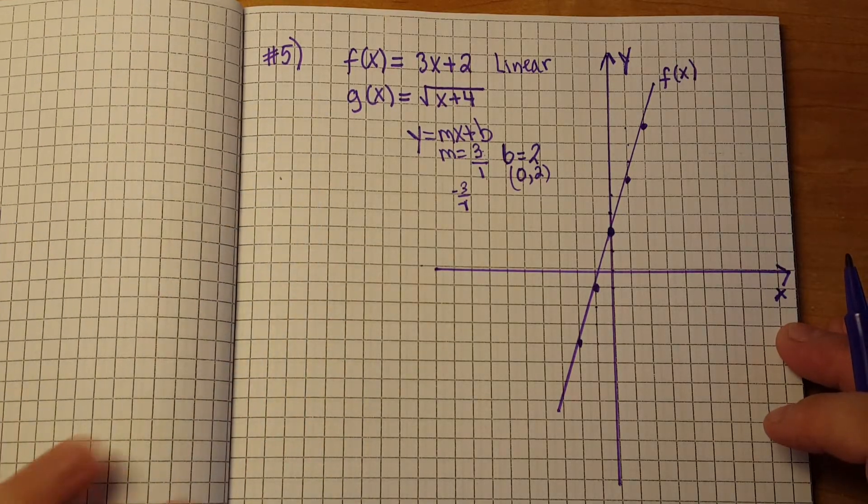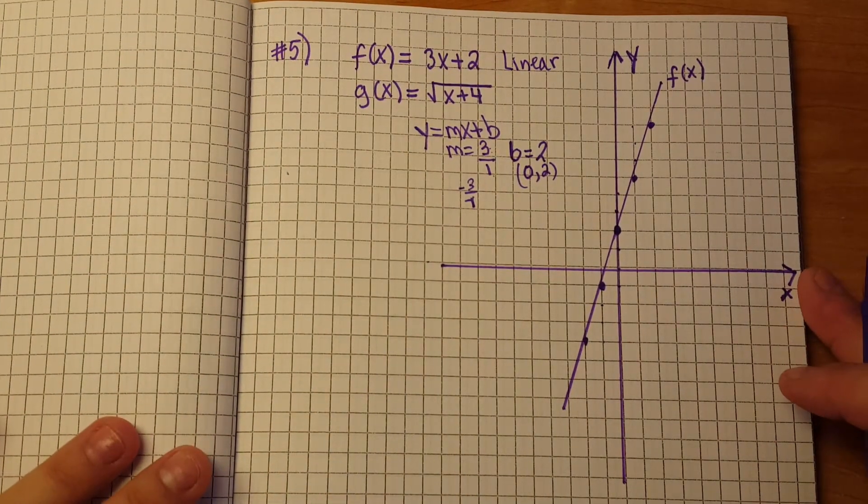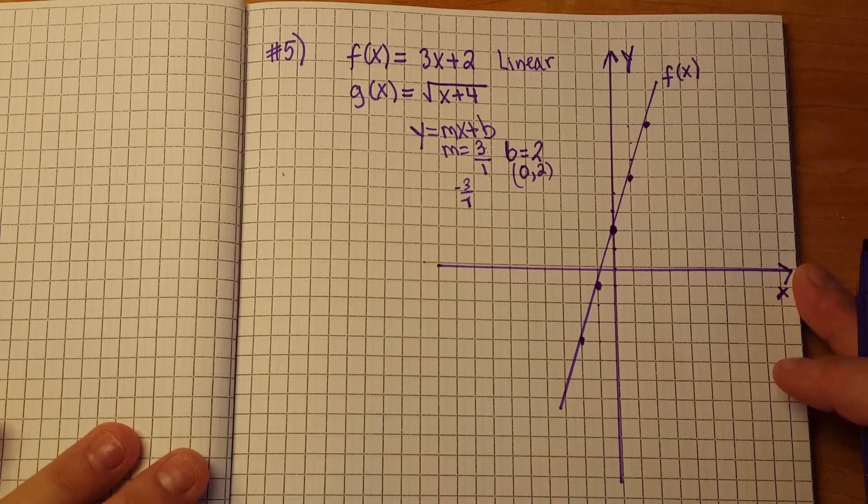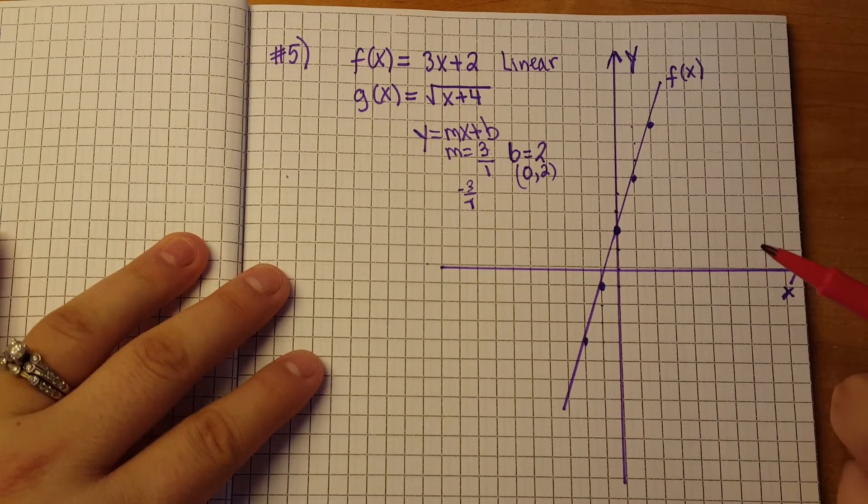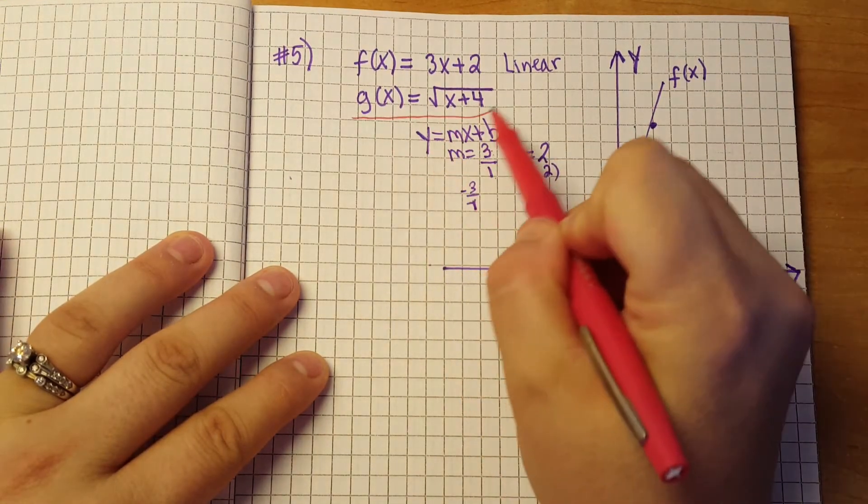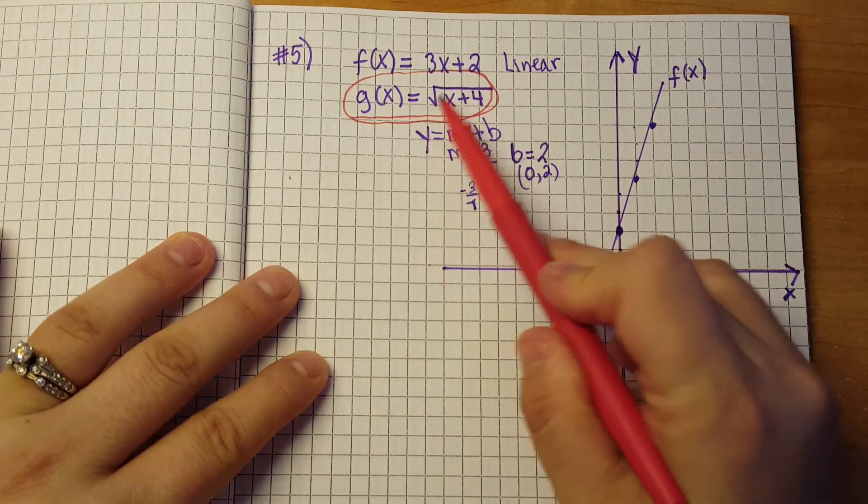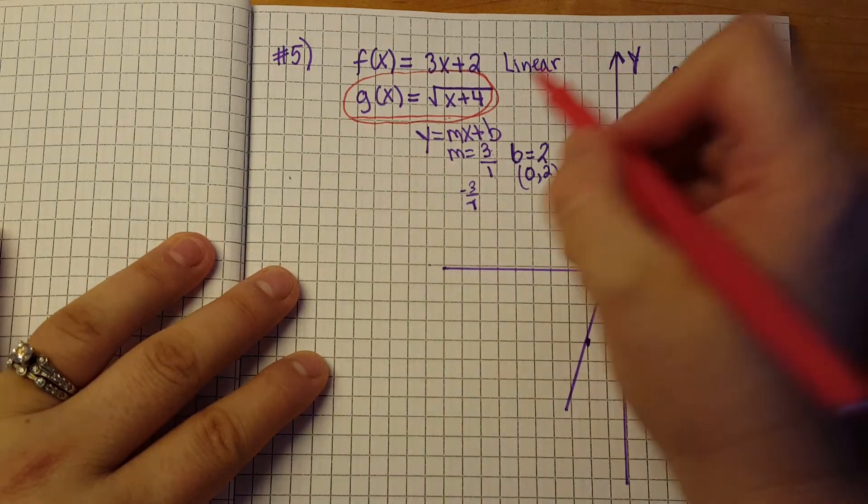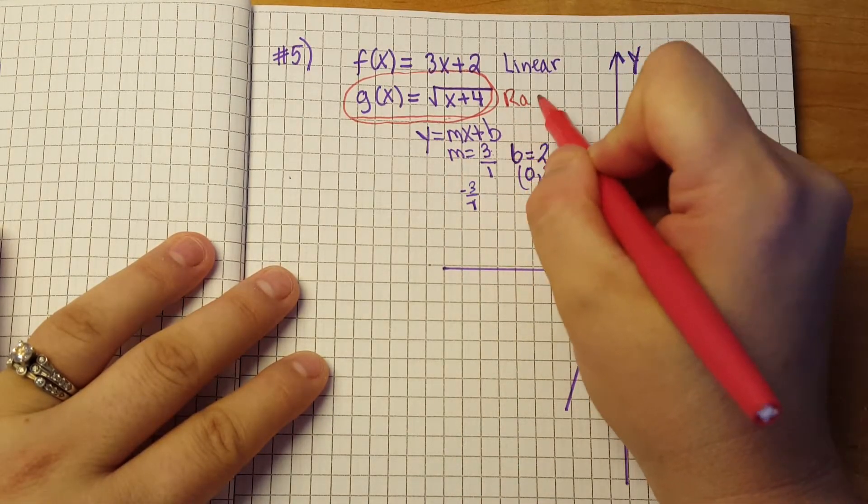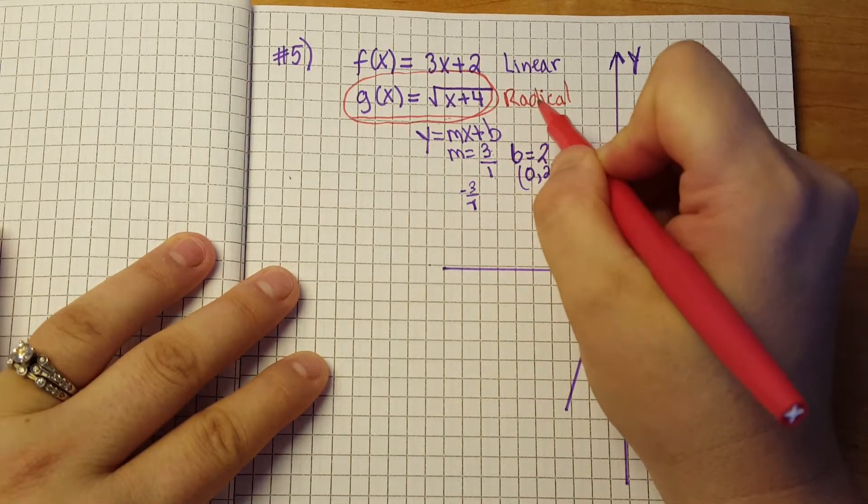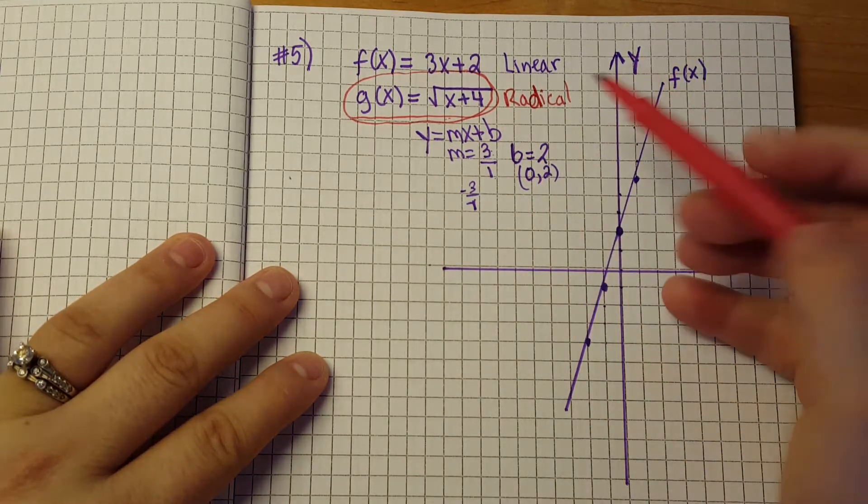Now we're ready to graph our g of x. Now I'm going to go ahead and use red for our g of x so we're right here graphing this equation. Looking at this equation we have a square root of x plus 4. So the name of this equation, this is called a radical equation. Okay, it's a radical function. A radical function. So our previous one was linear, second one is a radical function.